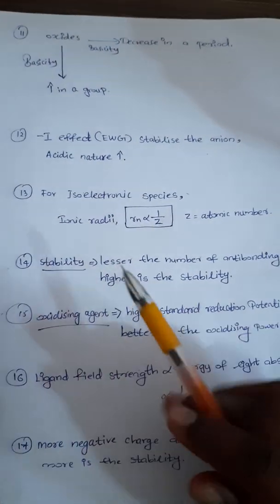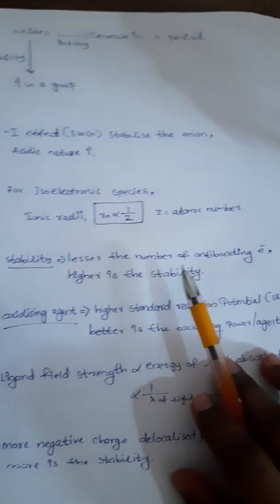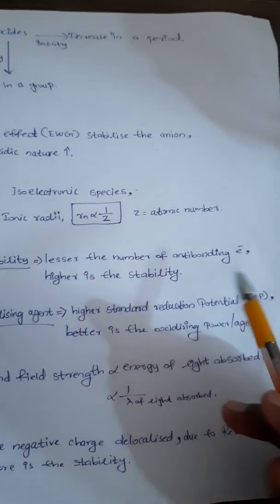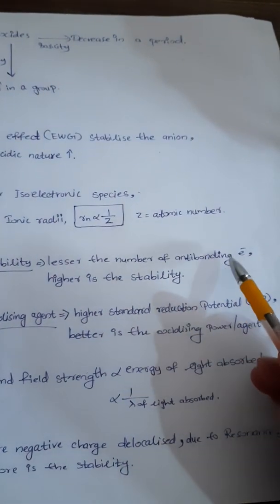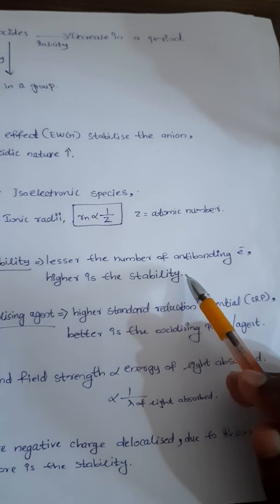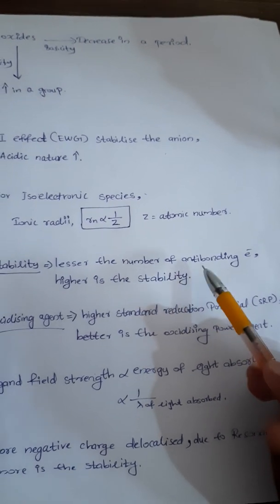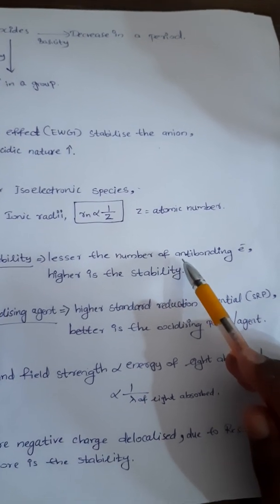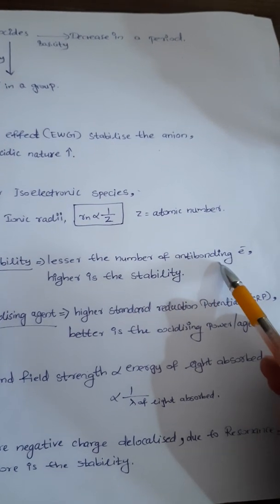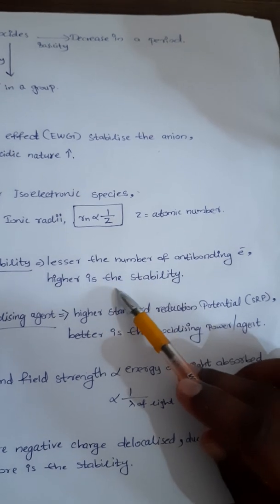Next point: I am taking stability. Lesser the number of anti-bonding electrons, then higher will be the stability. It is very important. So if the number of anti-bonding electrons is less, then stability will be higher.